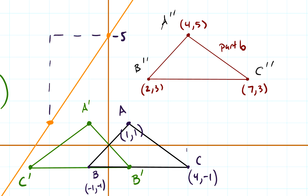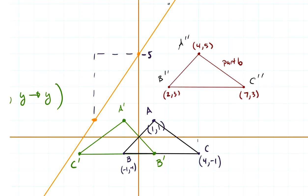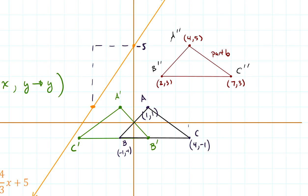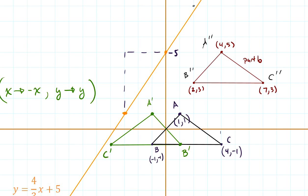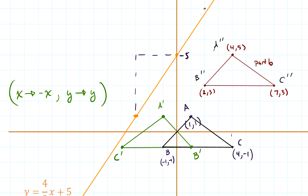My coordinates ended up being: A double prime was at (4, 5), B double prime was at (2, 3), and C double prime was at (7, 3). So this is the final transformation, and this is my solution to question number 10.